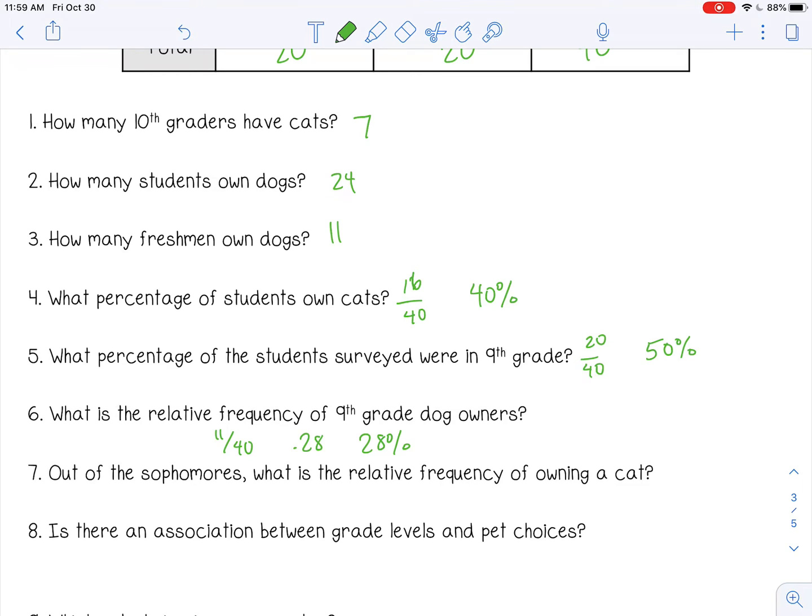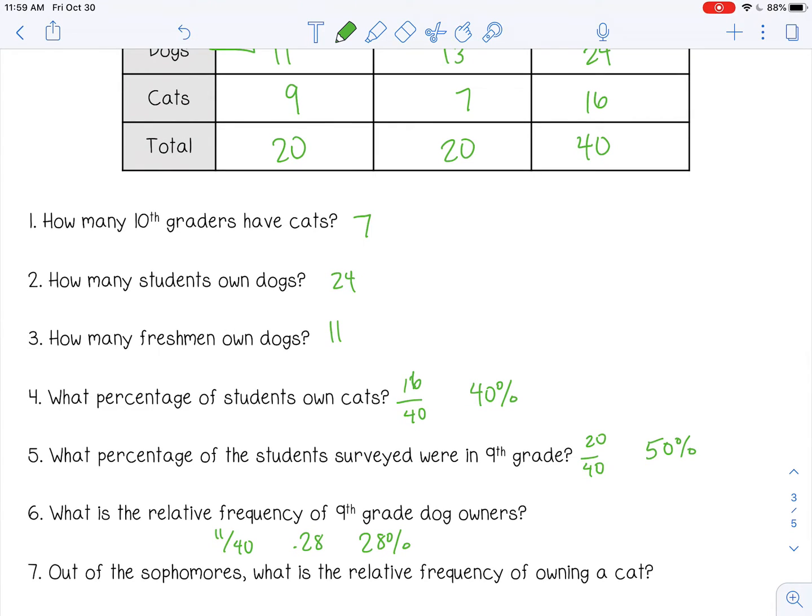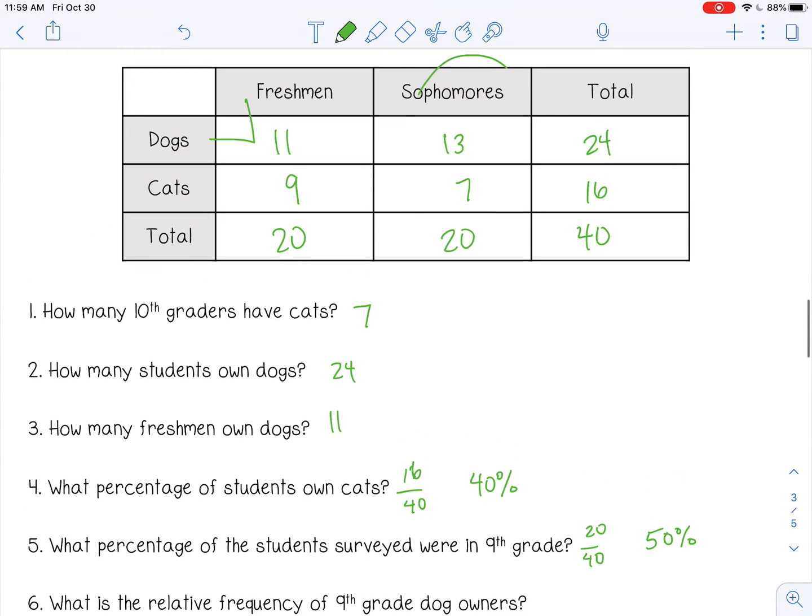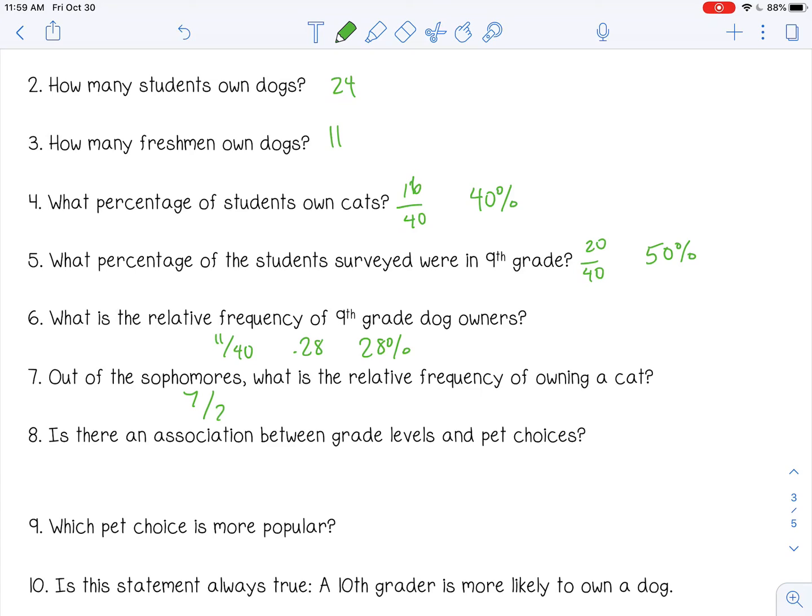Out of the sophomores, what is the relative frequency of owning a cat? Be careful with the wording here. We're only talking about the sophomores. And owning a cat, there's 7, so 7 out of 20. That doesn't reduce, but I can change it to a decimal and a percent.